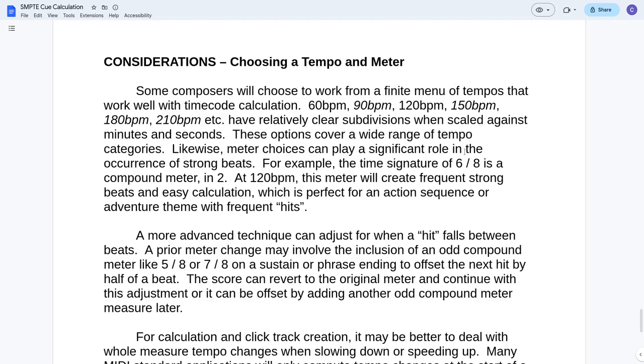Some composers will choose to work from a finite menu of tempos that work well with time code calculations. So you could have like a menu of 60 BPM, 90, 120, 150, 180, 210. These are 30 BPM increments and they will calculate really easily. They have relatively clear subdivisions when scaled against minutes and seconds. These options cover a wide range of tempo categories. Likewise, meter choices can play a significant role in the occurrence of strong beats.